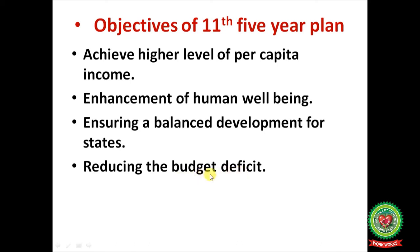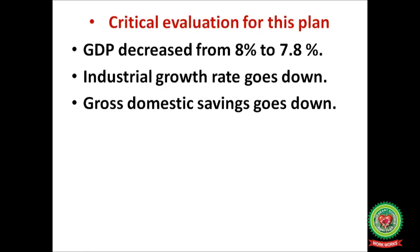Budget deficit means when government expenditures are more than receipts. Government expenditure includes making roads, dams, bridges, flyovers, giving subsidies to the common public like LPG cylinders, and providing raw materials to industries at cheaper rates, and fair price shops for common people. When government expenditure exceeds government receipts, there is a budget deficit — and budget expenditure is always aimed at the welfare of the economy. Critical evaluation: national income (GDP) decreased from 8% to 7.8%, industrial growth rate went down, and gross domestic savings also declined.